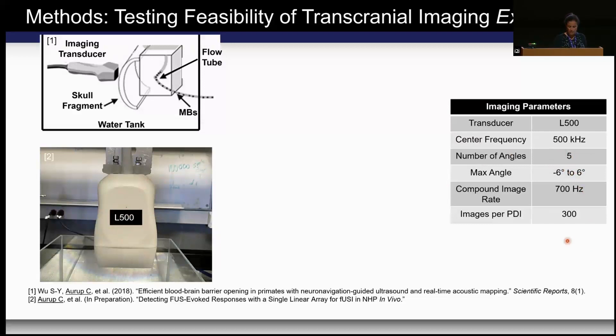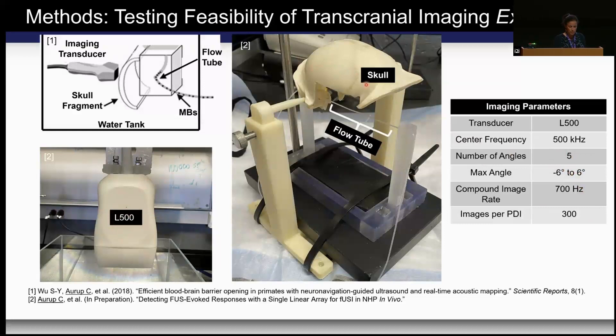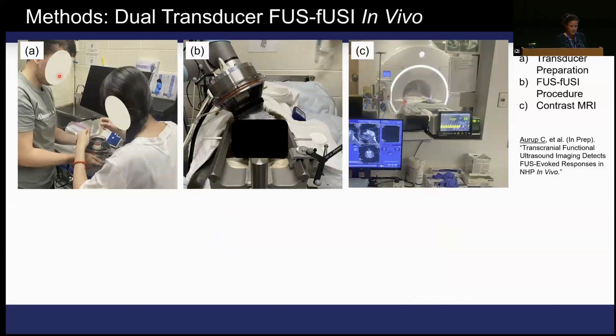We tested it through the non-human primate skull using a flow tube running microbubbles to confirm we could detect flow through the primate skull. Then we proceeded to do this in a monkey. The setup involves two transducers — one imaging at 500 kHz and one focused ultrasound at 250 kHz (a large cylindrical transducer). We do MRI at the end to confirm targeting and focusing quality. We trigger everything through the Verasonics scanner, with pre-stimulus, stimulus, and post-stimulus frames. We targeted the right somatosensory cortex using neuronavigation with MRI.